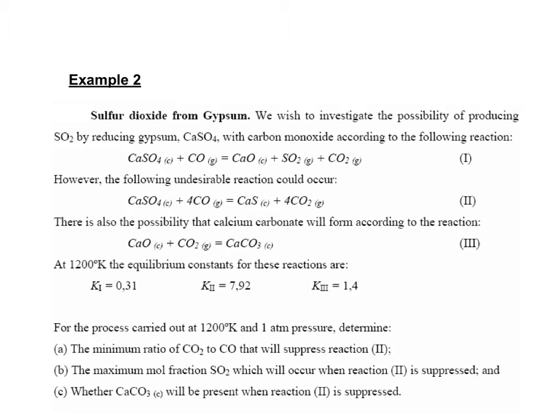In this example, we need to consider the production of sulfur dioxide from gypsum, our desired reaction, at 1200 Kelvin and 1 atmosphere pressure.